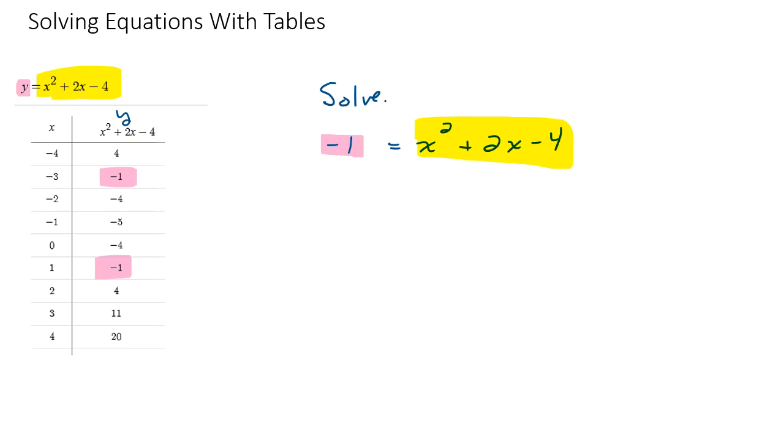So this is where you may not know how to solve this equation algebraically yet, and that's okay, and you'll eventually learn that if you keep going. But the table provides us a way to find the answers. Matter of fact, there are two answers to this, two solutions. If x is negative three, y will come out to be negative one. And if x is one, y will come out to be negative one.